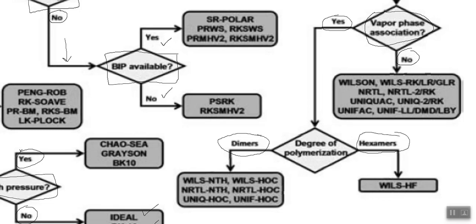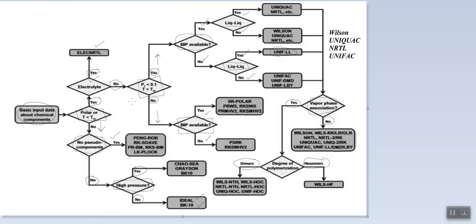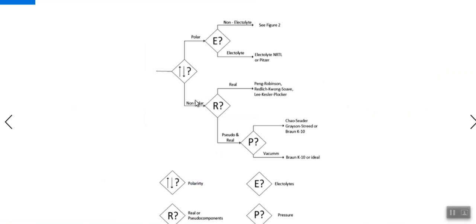That covers the whole scheme discussed today. Another way of representing this is through a second flowsheet. It is similar to the previous one: first check polarity. If non-polar, check whether components are real or pseudo. If real components, select Peng-Robinson, SRK, or Lee-Kesler-Plöcker. If pseudo components, check pressure: high pressure gives Chao-Seader, Grayson-Streed, or BK10; vacuum gives BK10 or Ideal. If polar, check for electrolytes: if electrolytic, use Electrolyte-NRTL.